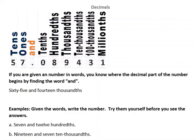Hi, it's Carly McAvoy, just finishing off the video about how to write and read decimal numbers. If you're given a number in words, you know where the decimal part of the number begins by finding the word AND. So if you're given 65 and 14 thousandths and you want to write that as an actual number, you have 65 and then decimal point because the decimal point is the word AND.